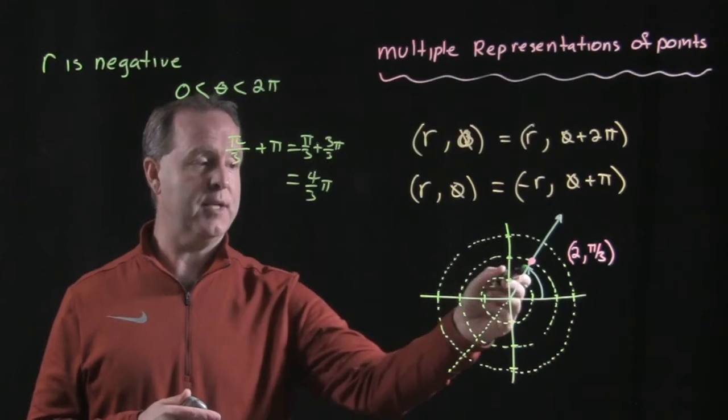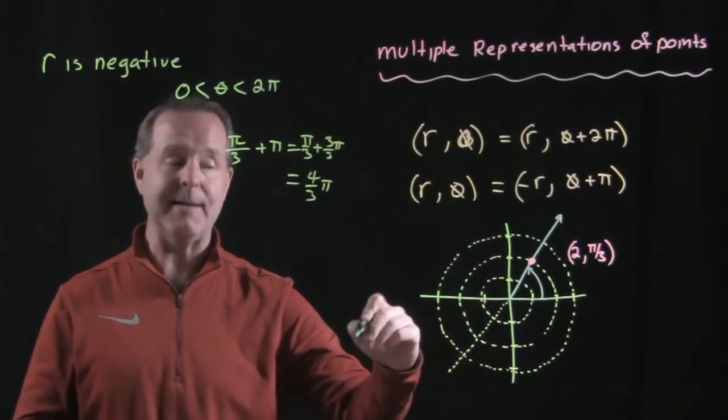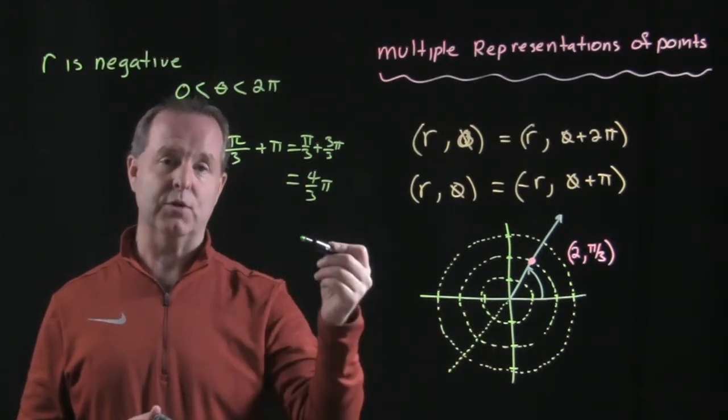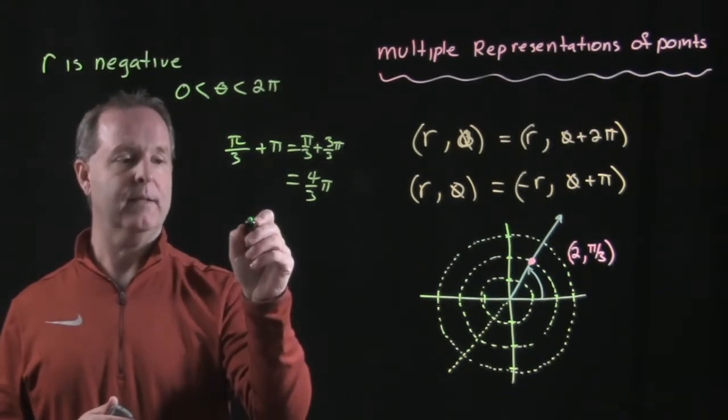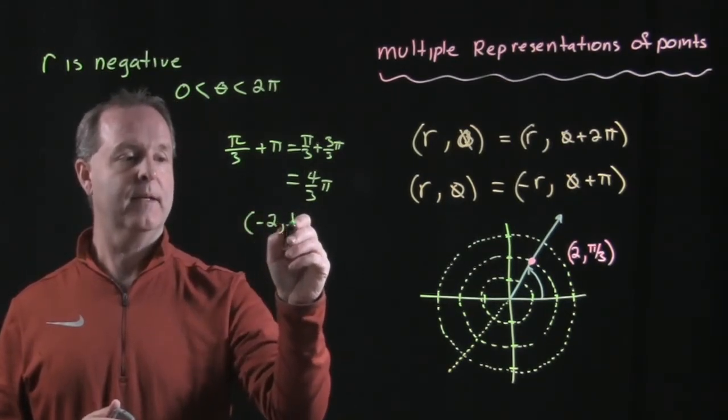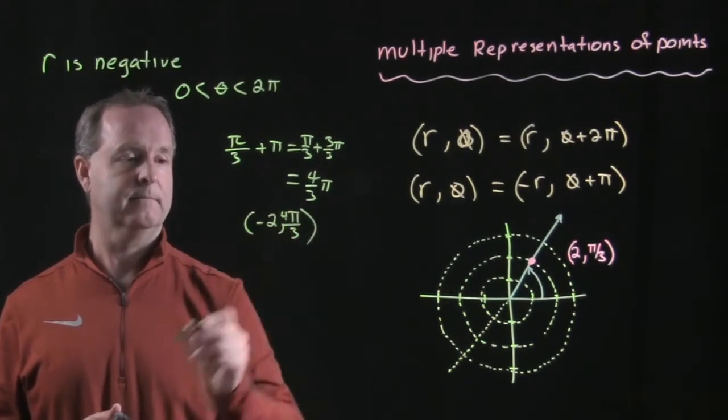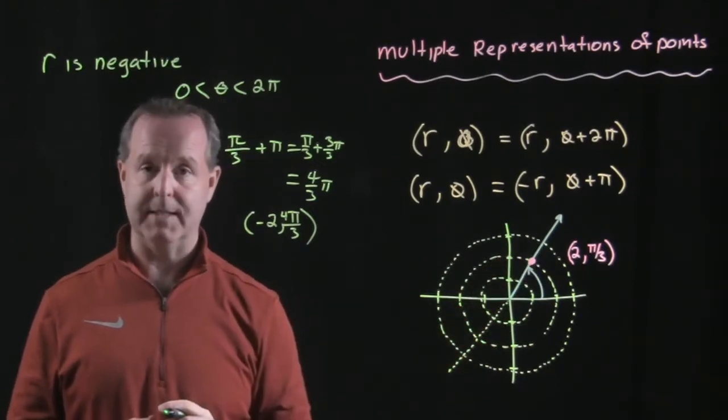So that direction is 180 degrees from my original direction, or another π past that, but I'll need to move it in the opposite direction, so r will need to be negative in that case. So my new point is going to be (-2, 4π/3), and that will line up again on this original position.